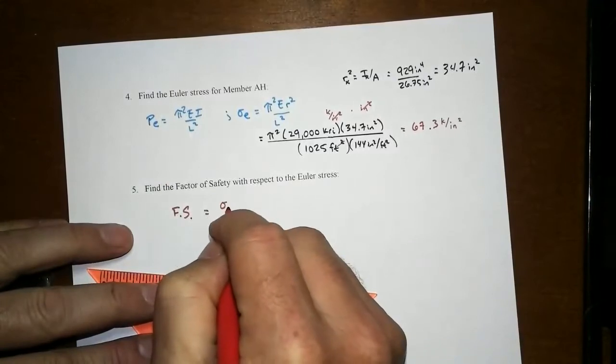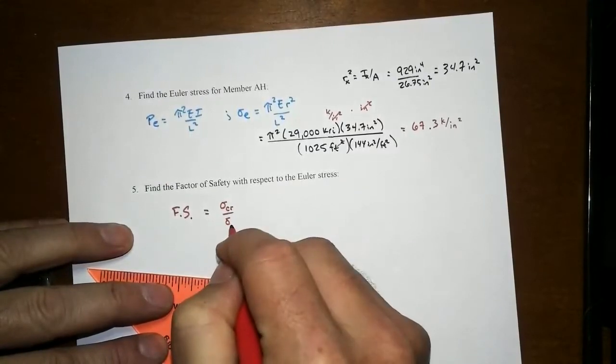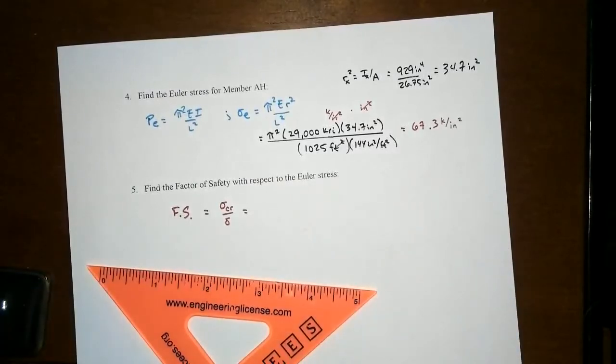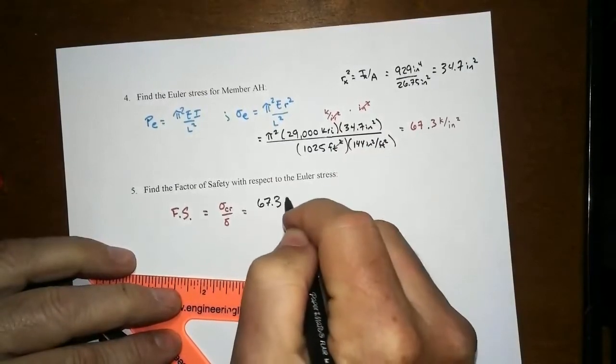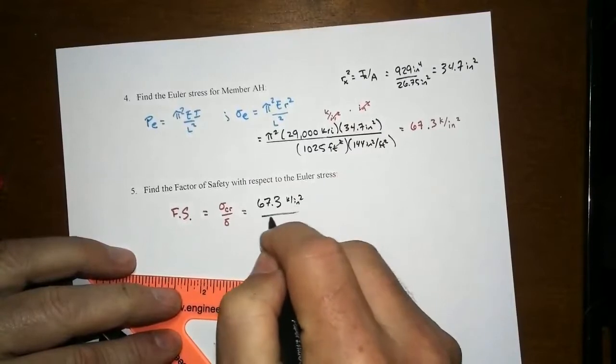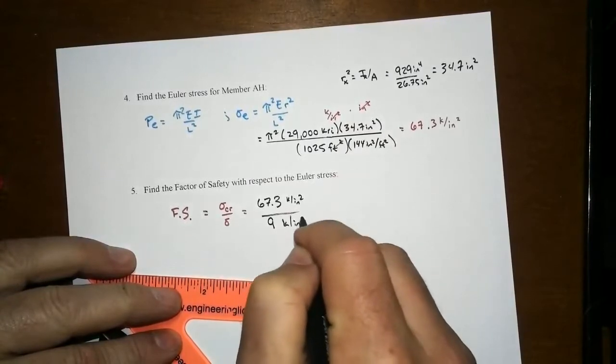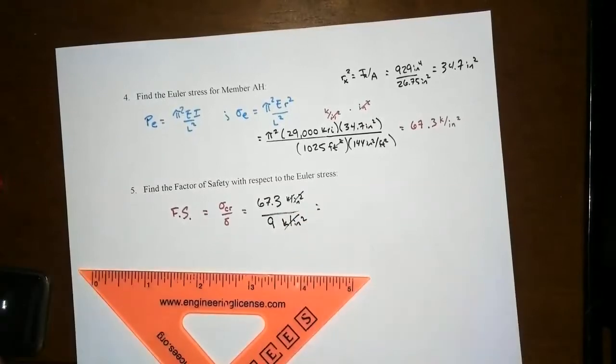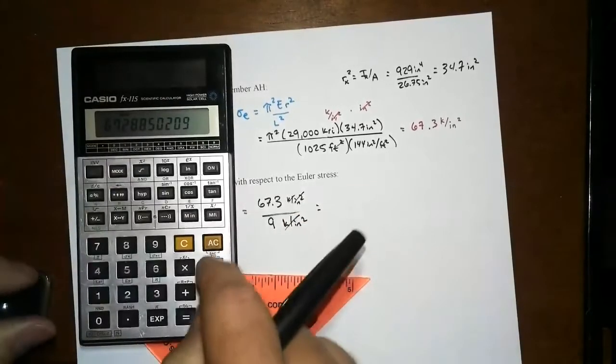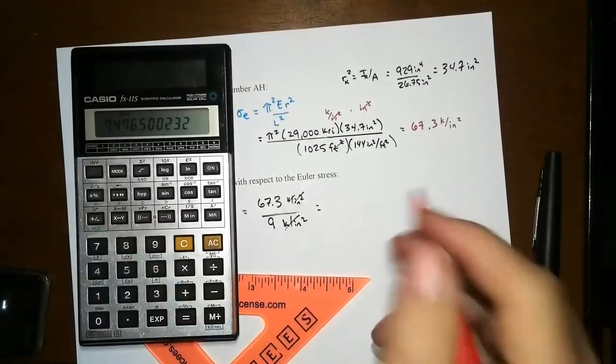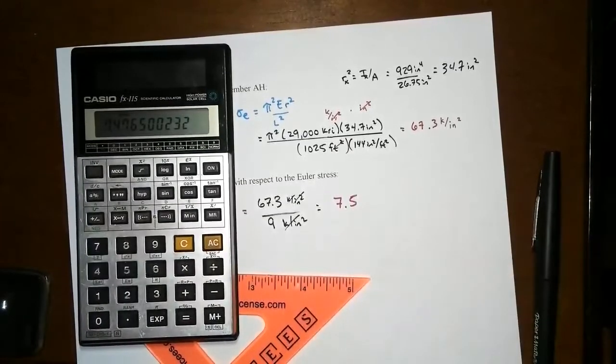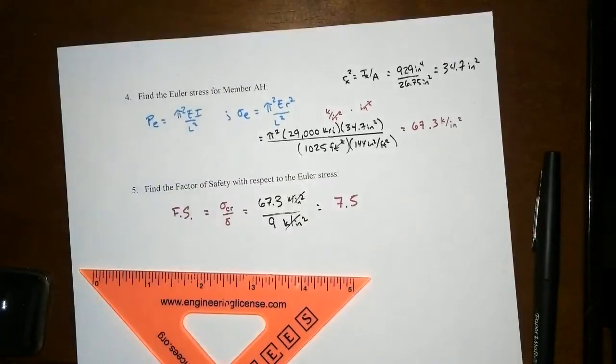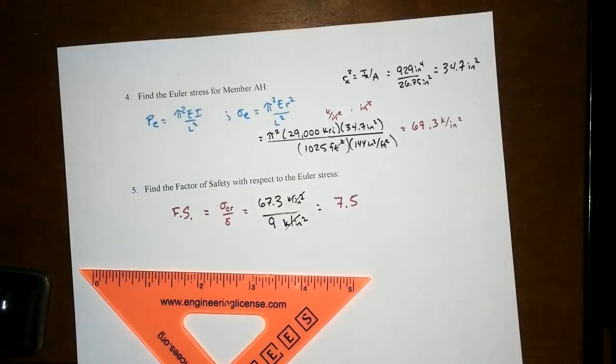Our factor of safety with respect to the Euler stress is our critical stress divided by our demand. In this case, we had a critical value of 67.3 kips per square inch. Our applied stress was about 9 kips per square inch, so the units are all the same. Dividing through, 67.3 divided by 9 gives you a factor of safety of 7.5, which is quite large. There's some other factors that are at work here in terms of the real member and its strength that we are also eventually going to have to consider.